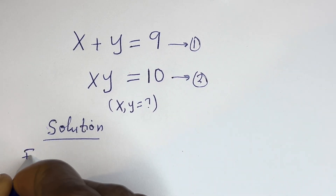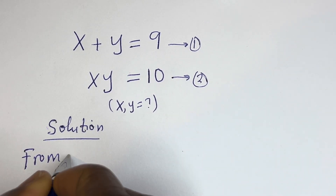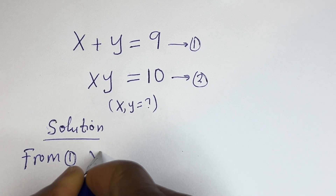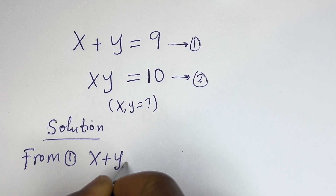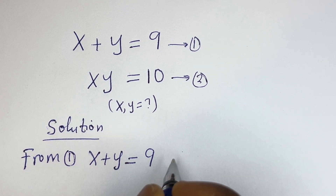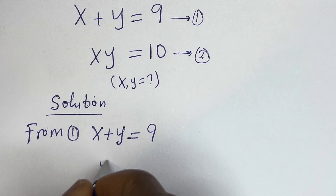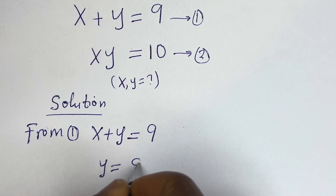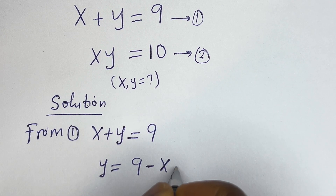From equation 1, x plus y is equal to 9, so y is equal to 9 minus x. Let's call this equation 3.